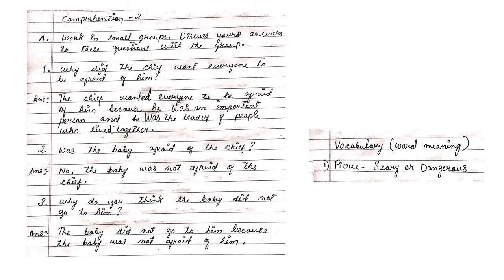Now we will see Comprehension 2 — question and answer. Number A: work in small groups and discuss your answers to these questions. Question one: why did the chief want everyone to be afraid of him? The answer is: the chief wanted everyone to be afraid of him because he was an important person and he was the leader of the people. Question two: was the baby afraid of the chief? Answer: no, the baby was not afraid of the chief.